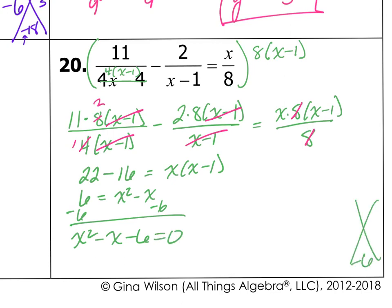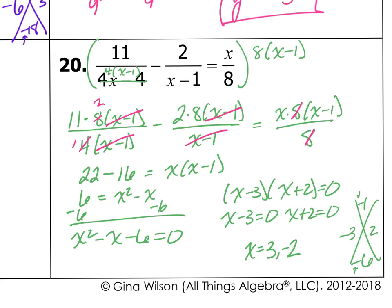Factor that. What multiplies to be negative 6 and adds to be negative 1? That's 3 and 2, negative 3 and 2. So I'm going to get x minus 3 times x plus 2 equals 0. So x minus 3 equals 0 and x plus 2 equals 0. So x is going to equal 3, negative 2. Does either one of those make my denominator 0? No. I think the only thing that would make it 0 is positive 1. So there are no extraneous solutions, and there's my answer.